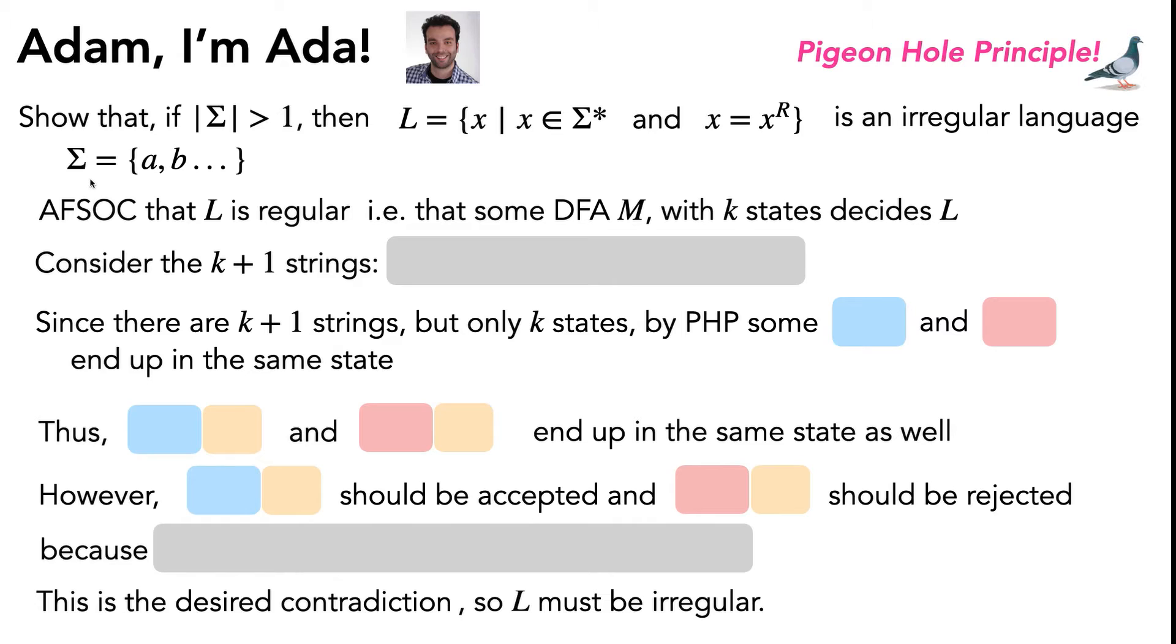With that in mind, take a moment, pause, and try and fill out this proof template yourself. Try and pick out the k+1 strings, write down what two arbitrary strings from the set you selected would look like, and pick out what you want to concat onto the two strings in order to get the contradiction.